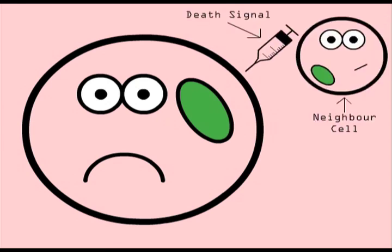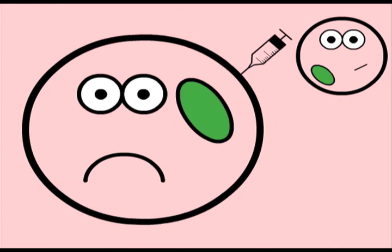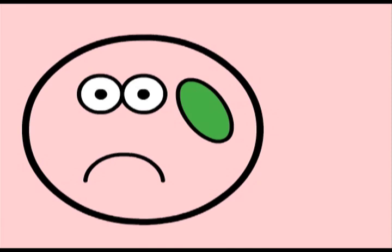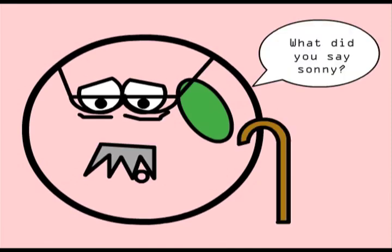Apoptosis can start by a neighboring cell releasing a death signal telling the cell it's time to die. The neighboring cell knows to release this signal if the cell junctions have been compromised or the cell is too old.